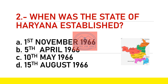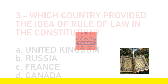The next question is: when was the state of Haryana established? The options are A) 1st November 1966, B) 5th April 1966, C) 10th May 1966, or D) 15th August 1966. The answer is A) 1st November 1966.